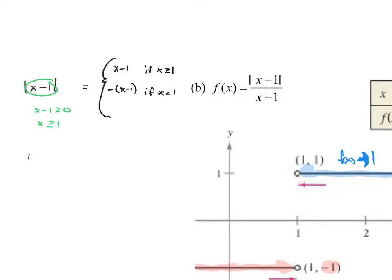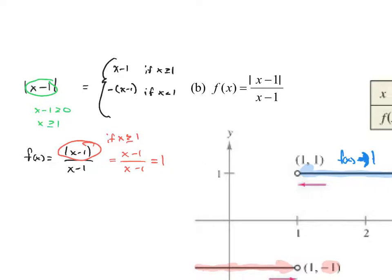Going back to f(x) equals the absolute value of x minus 1 over x minus 1: if x is greater than or equal to 1, the numerator is x minus 1, so the fraction simplifies to 1. If x is less than 1, the numerator is negative (x minus 1), and after simplification, the function equals negative 1.